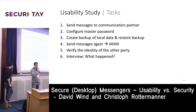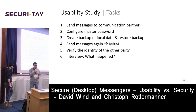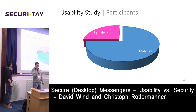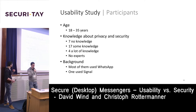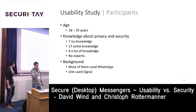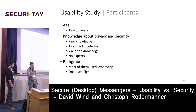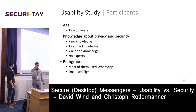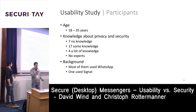We then interviewed participants and asked if they knew what had happened. We had seven female and 21 male participants, aged 18 to 35. Seven reported no knowledge about privacy and security, 17 had some knowledge, and four had a lot — but there were no experts. Most used WhatsApp; only one had used Signal before.